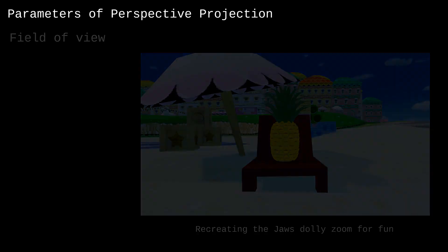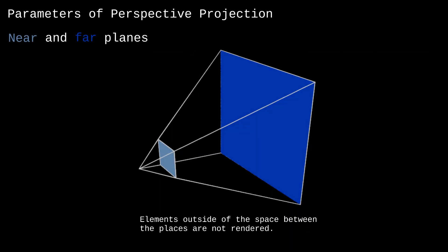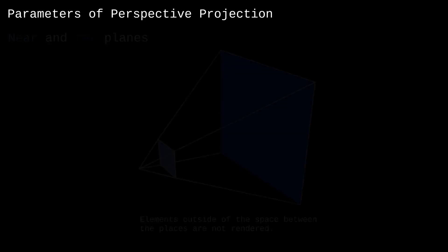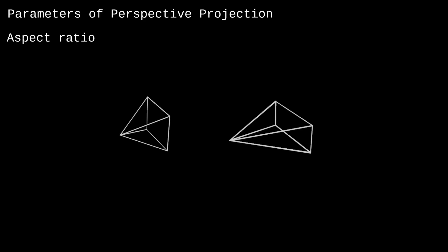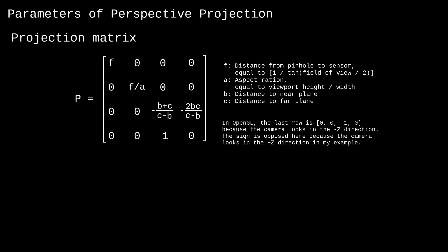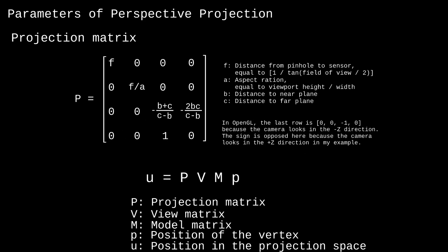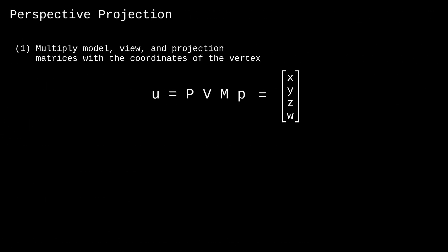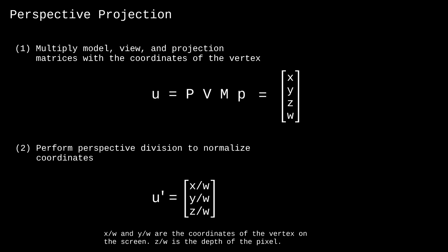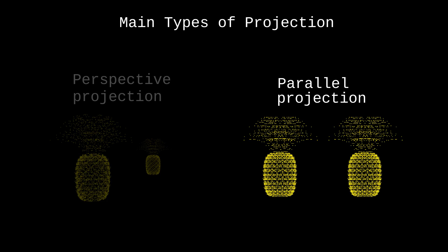Apart from the field of view, we can parameterize perspective projection with the near and far planes — that is, the boundaries of the space that will be rendered onto the screen — as well as the aspect ratio of the camera. These parameters can be plugged into a projection matrix, which we can add to our chain of matrices. To obtain the 2D projection, we need to multiply all of these matrices with the coordinates of the vertex that we want to project. Finally, we divide the first three elements of the homogeneous coordinates by the last one. This is called perspective division. Another type of projection is called parallel.